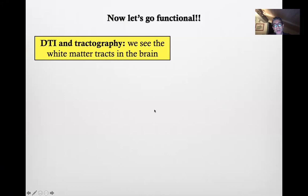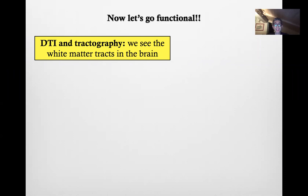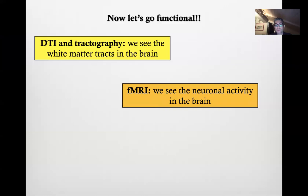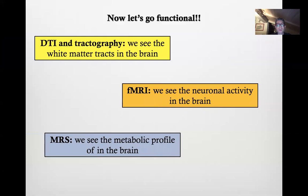We have a few important sequences. The first one is called DTI tractography, basically a technique that allows us to visualize the white matter tracts in the brain. Then we have functional MRI, where we see the neuronal activity in the brain, and then we have MR spectroscopy, where we see the metabolic profile of the brain.